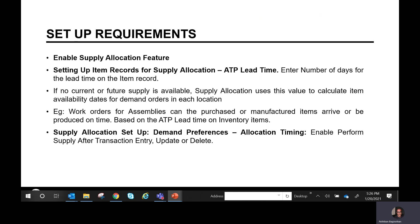First and foremost, you need to enable the supply allocation feature. The other key thing is setting up item required records for supply allocation — specifically the ATP lead time, or available to promise lead time. That's typically entered as a number of days on the item record.